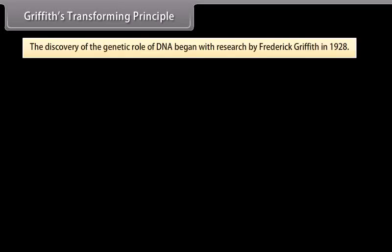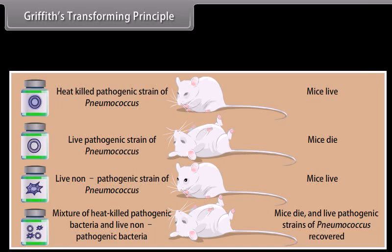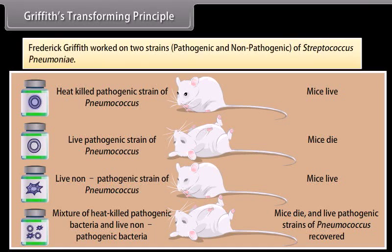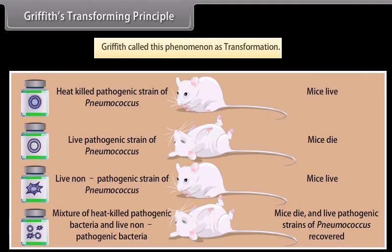Griffith's Transforming Principle. The discovery of the genetic role of DNA began with research by Frederick Griffith in 1928. Griffith worked on two strains — pathogenic and non-pathogenic — of Streptococcus pneumoniae. He found that when he mixed the heat-killed remains of the pathogenic S-strain with living cells of the non-pathogenic R-strain, some of these cells became pathogenic. Griffith called this phenomenon Transformation.